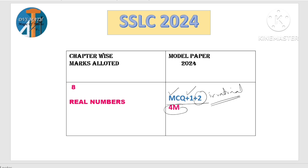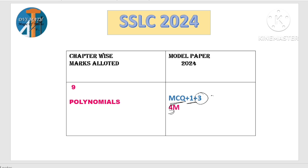Second part — first lesson is polynomials: 5 marks weightage. MCQ 1 mark, ಮತ್ತು 3 marks ಗೆ division of polynomial — ಇದು almost 100% match, easy guess mark ಬರುತ್ತೆ. Total 5 marks weightage for polynomials.